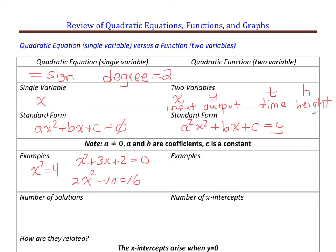And some examples of a quadratic function? Let's turn all of those into functions. Let's say y = x² - 4, or y = x² + 3x + 2. We're turning all of these into functions now. And let's say y = 2x² - 26. In this case we've got two variables.